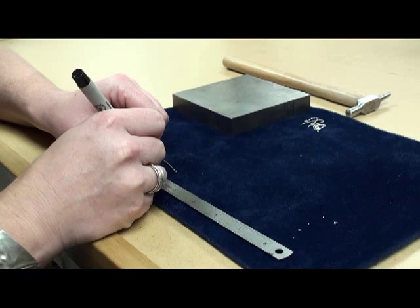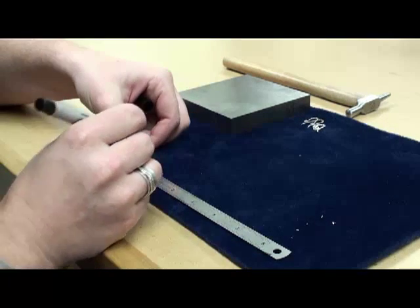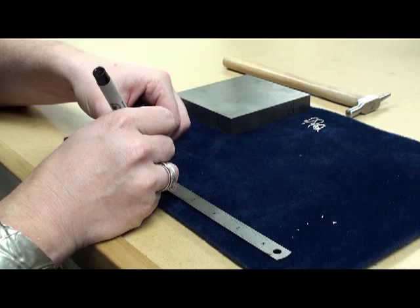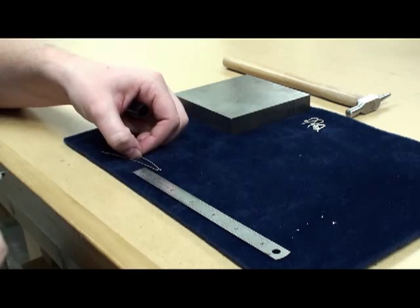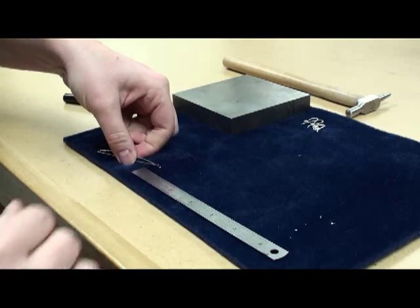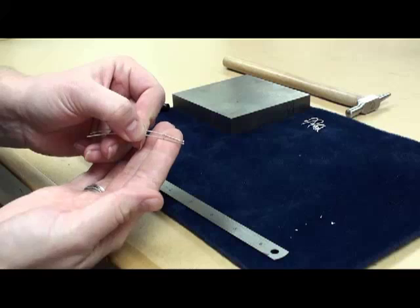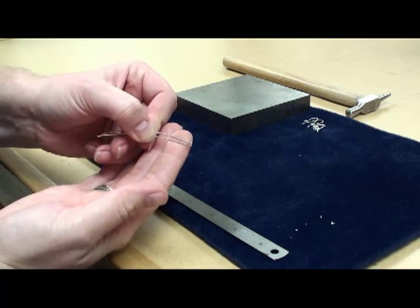I'm going to use my Sharpie, create my little mark. Might as well do it for both of them since they're right here. And that tells me where to hold my wires within my pliers so that I can create that loop. And so yeah, you can see that Sharpie mark on there.